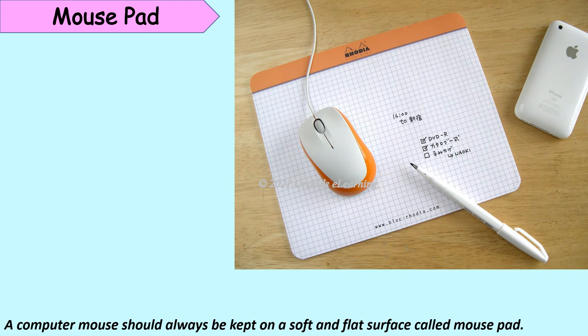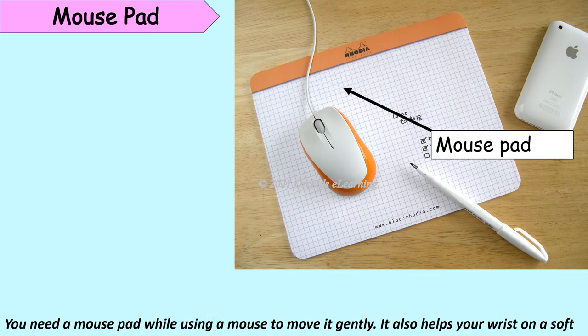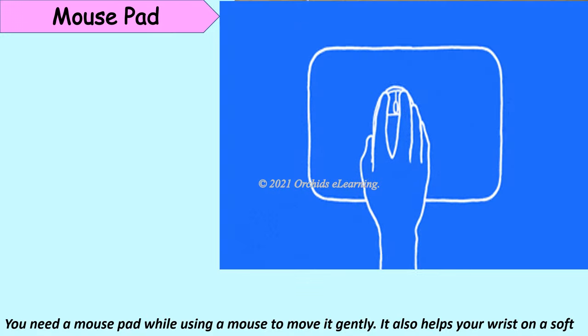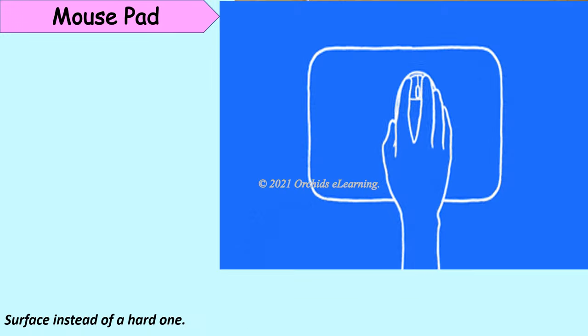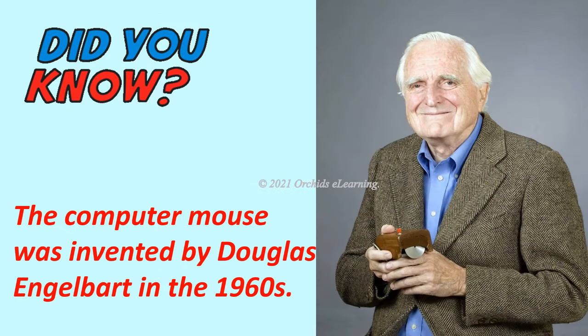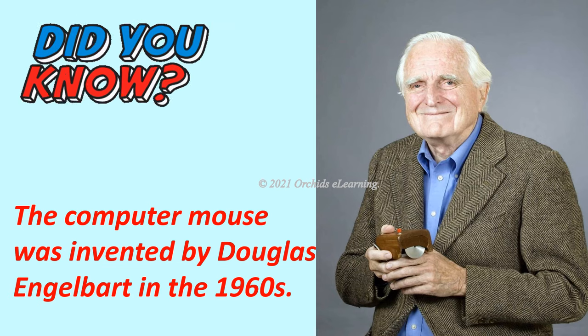A computer mouse should always be kept on a soft and flat surface called a mouse pad. You need a mouse pad while using a mouse to move it gently. It also helps your wrist by providing a soft surface instead of a hard one. Did you know? The computer mouse was invented by Douglas Engelbart in the 1960s.